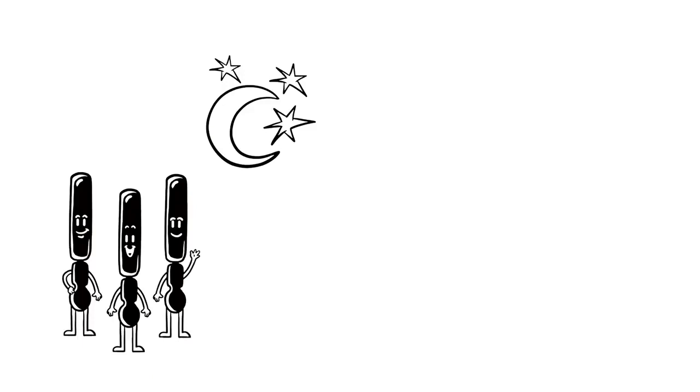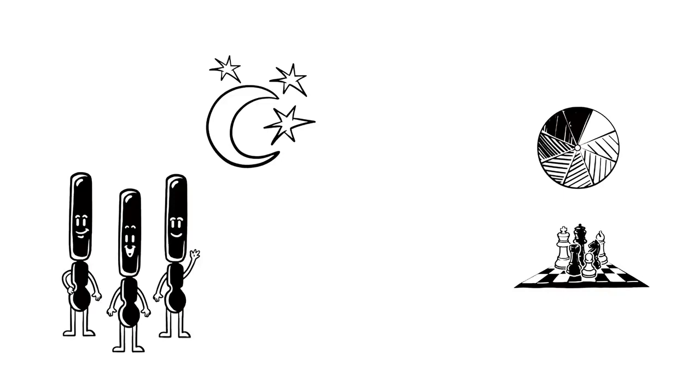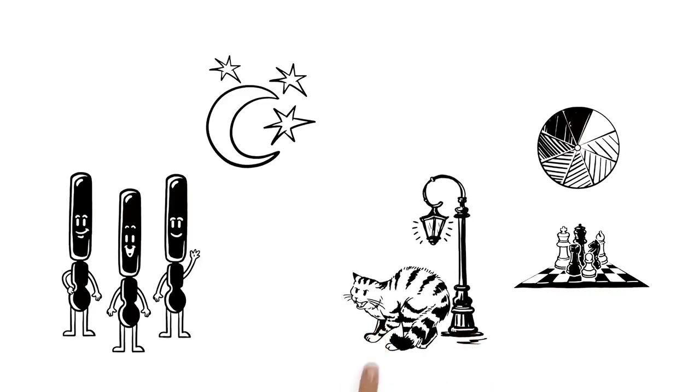At night, only the rods are active. They help us to perceive shades of gray and light-dark contrasts. That keeps us from walking into a lamppost in the dark. But all cats look gray at night.